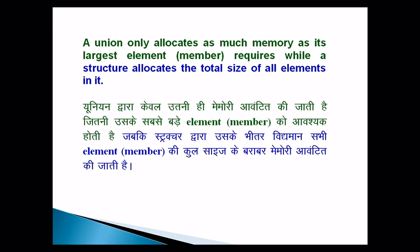A union only allocates as much memory as its largest element or member requires, while a structure allocates the total size of all elements in it. For example, if a structure has two elements — one integer and one character — the integer takes two bytes and the character takes one byte.